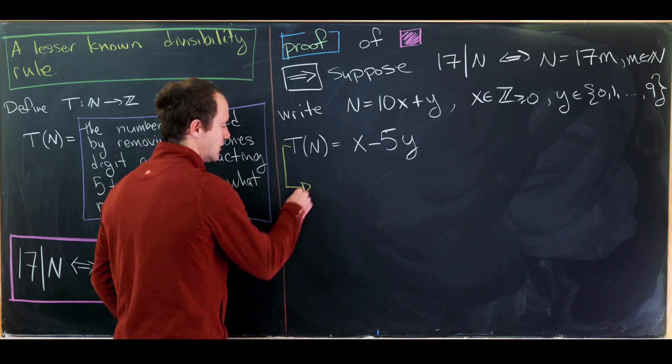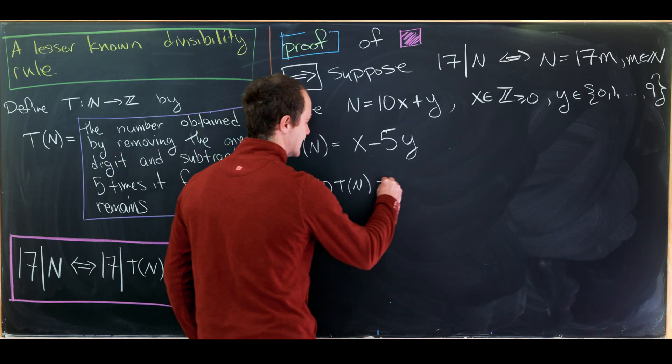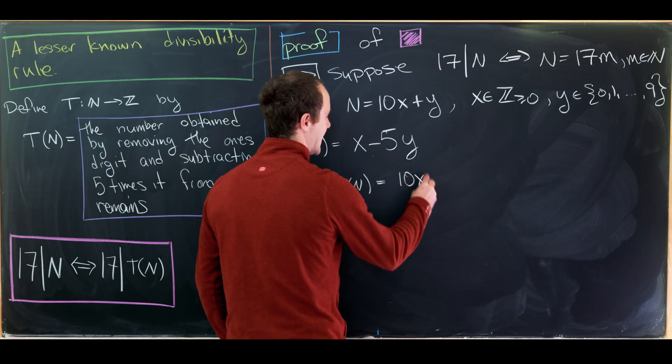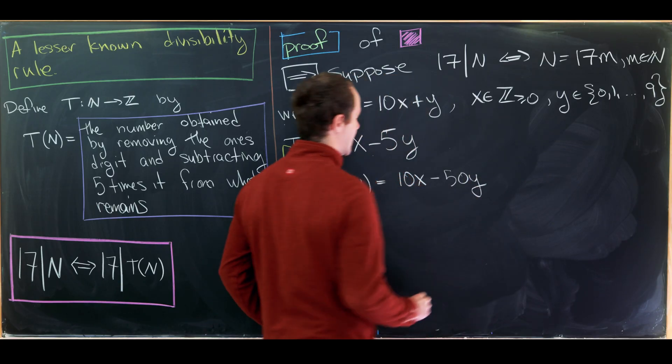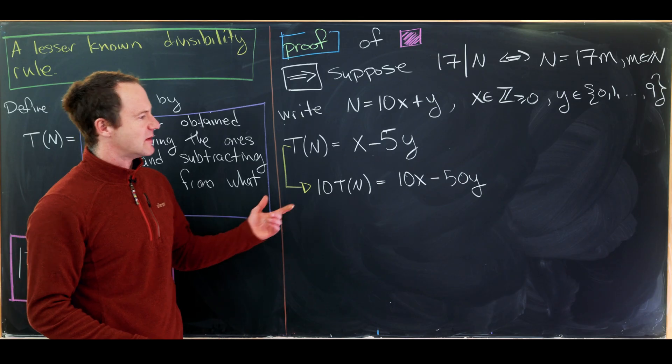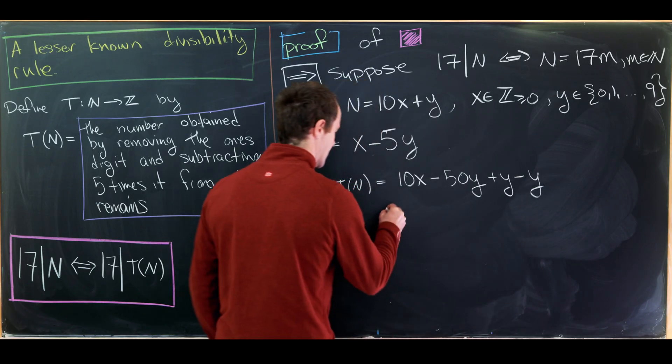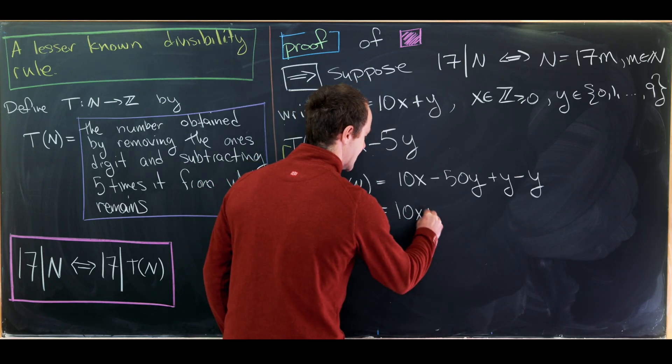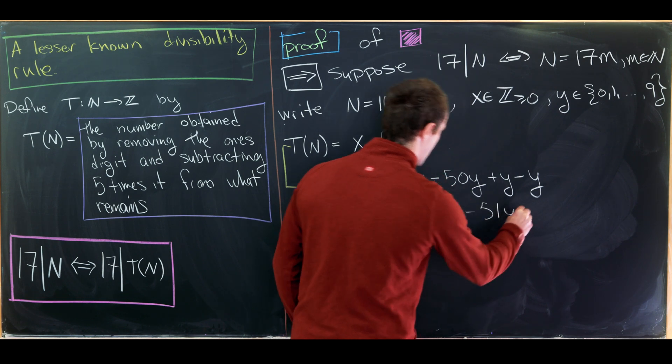Let's say this yellow arrow is multiplying this thing by 10. So we have 10 times T(n) is equal to 10x minus 50 times y. But now what I'd like to do is maybe add a y in and subtract a y. So we'll add y and subtract y. And we'll write this as 10x plus y and then minus 51y.